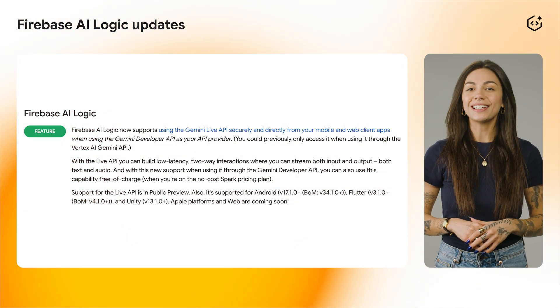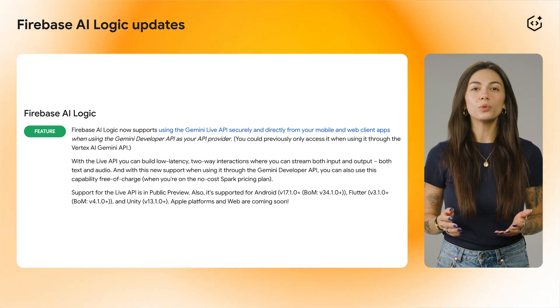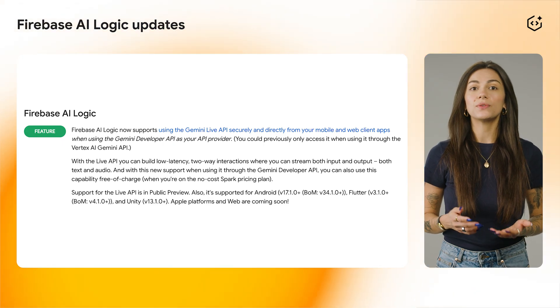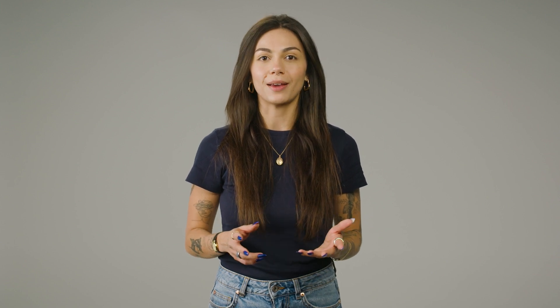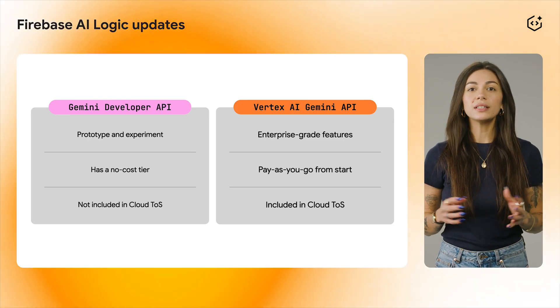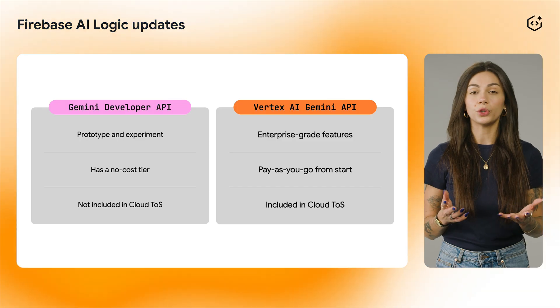First, let's talk about some exciting new features in Firebase AI Logic. Our SDKs already supported the Gemini Live API, which lets you create user experiences featuring natural human-like voice conversations. However, the Live API was available only through the Vertex AI Gemini API. We've now expanded our integration to include a no-cost option through the Gemini Developer API. I'll link the documentation in the description to help you choose which one is the best fit for your apps.